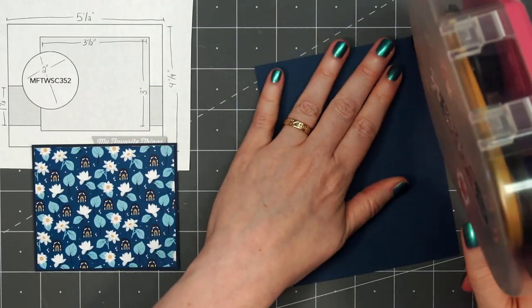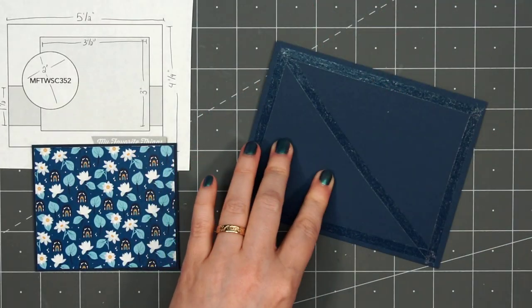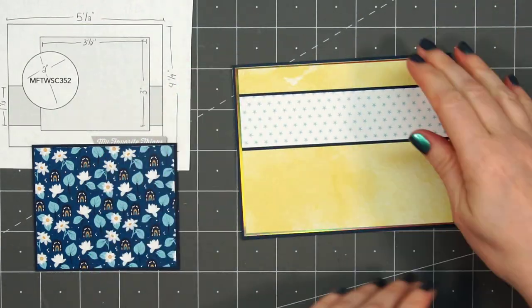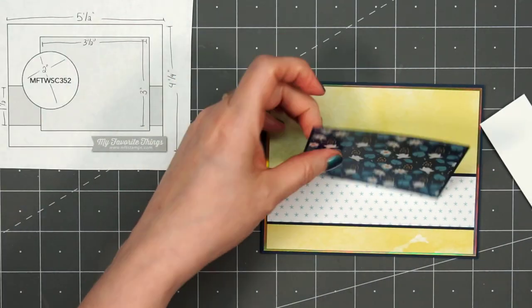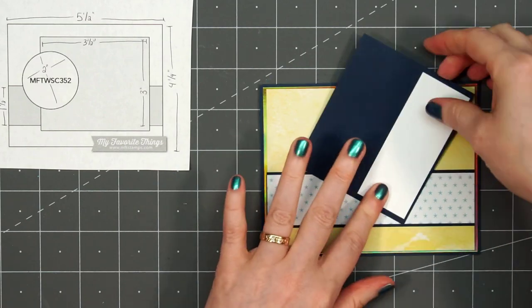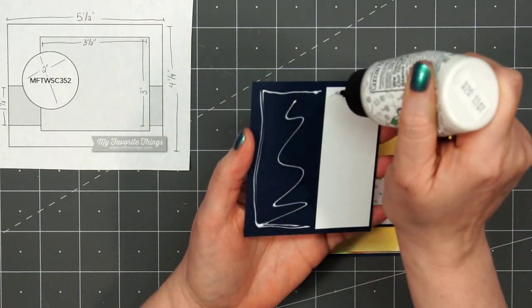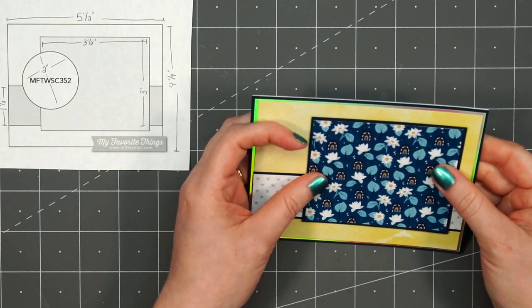I'll adhere my card front onto my card base. All of my cards in this video are American Standard A2 size, 5.5 inches by 4.25 inches. Before I add this floral panel with all the little rainbows, I will add a scrap piece of cardstock to the upper portion where it goes off of that star strip just to keep it nice and level. Then I'll adhere it in place.